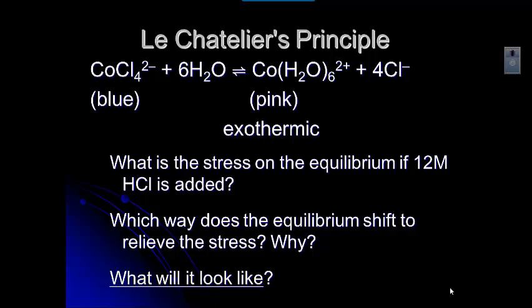Think about where hydrochloric acid — the HCl — would affect this reaction. If you add more hydrochloric acid, you're going to have more chloride ions in the system. So the system has to shift to relieve that stress. It has too much chloride, so it needs to shift in a direction that uses up that chloride. It is going to shift to the left, using up the chloride. If you're shifting to the left, it's making more of the blue cobalt product, so it's going to turn more blue.